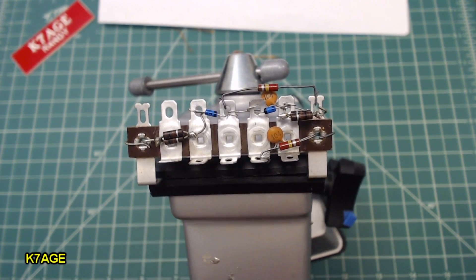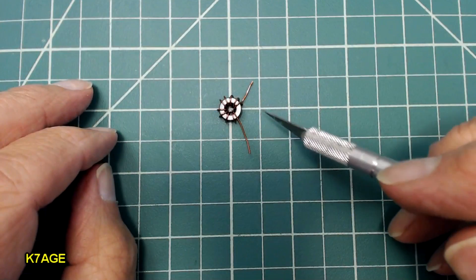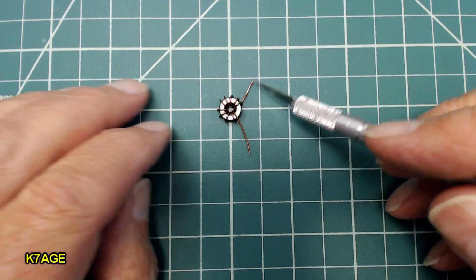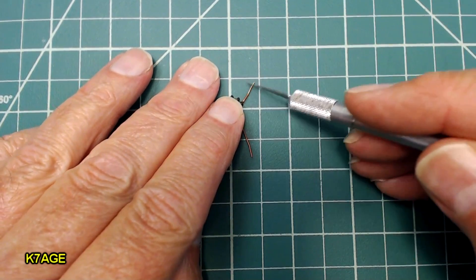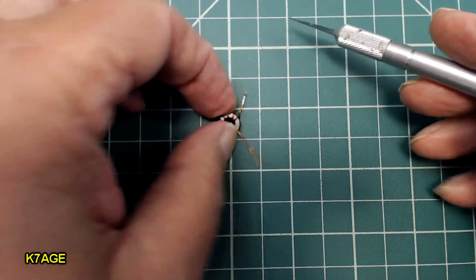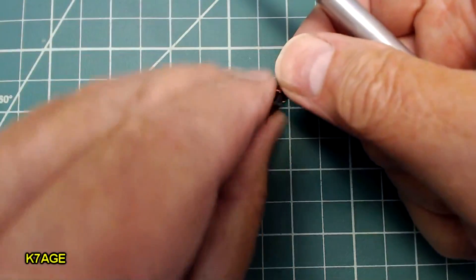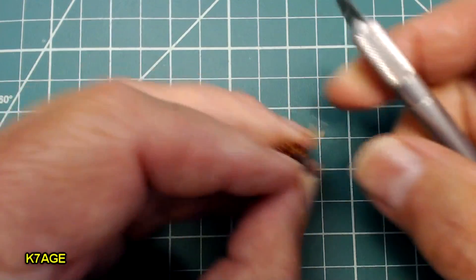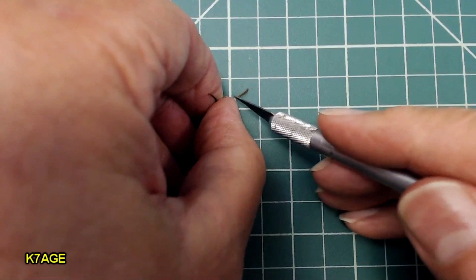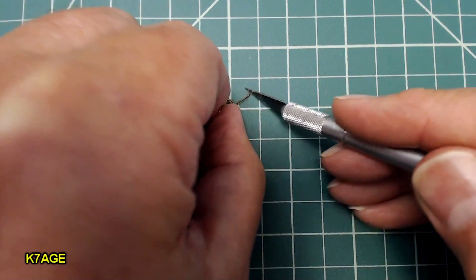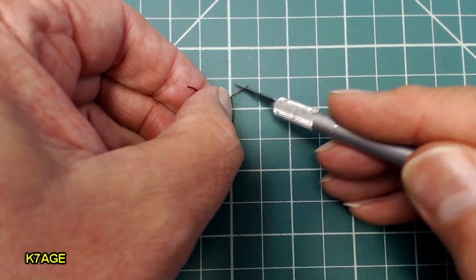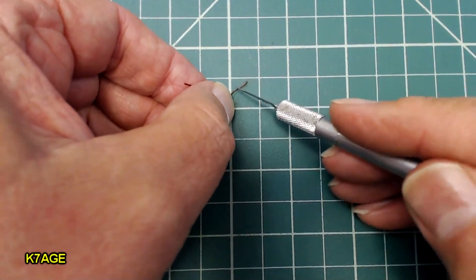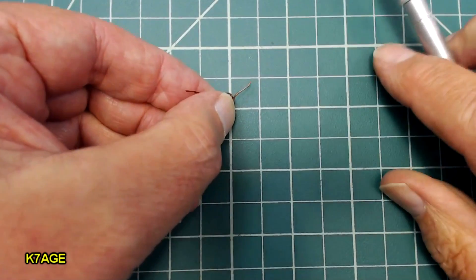So I think I'm ready now to prepare the toroids to be mounted. So I've trimmed my coil leads here for the terminal strip, and now I need to scrape off the enamel. So one way, you can just use a knife, knife edge, and just kind of scrape along here. And you can take and remove all of the enamel coating. You can see I'm getting some bits on the green mat.